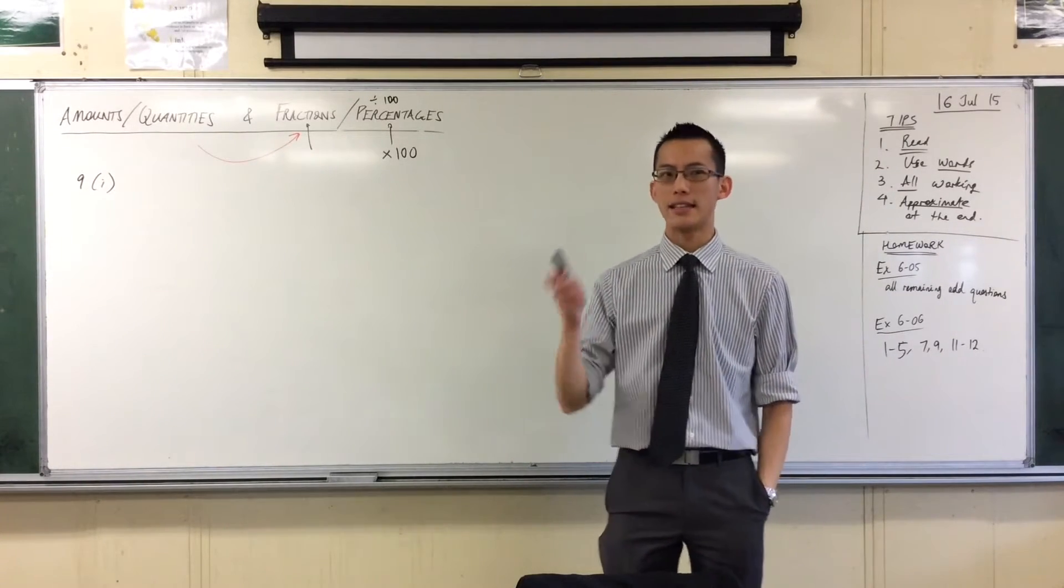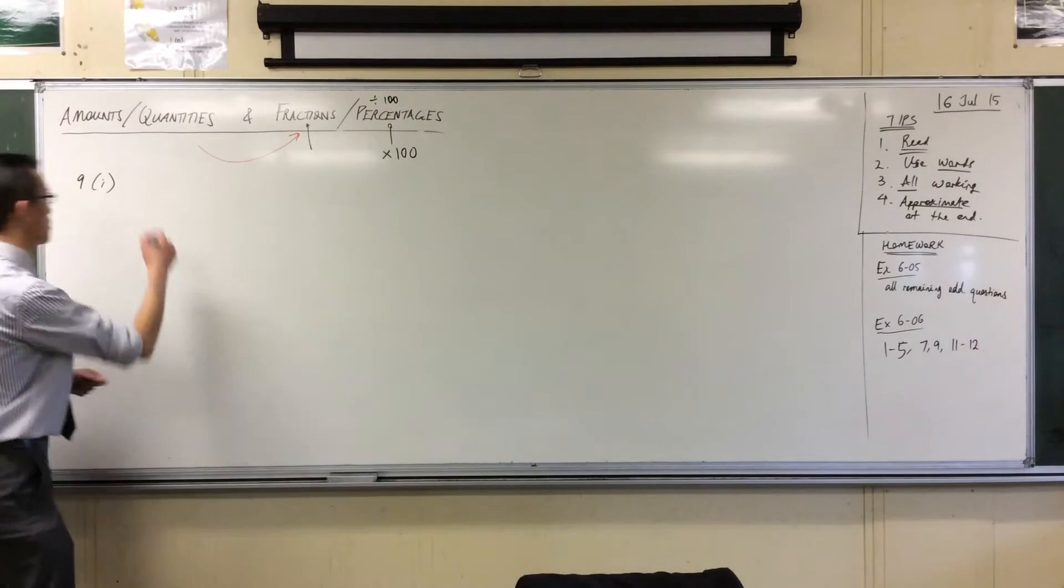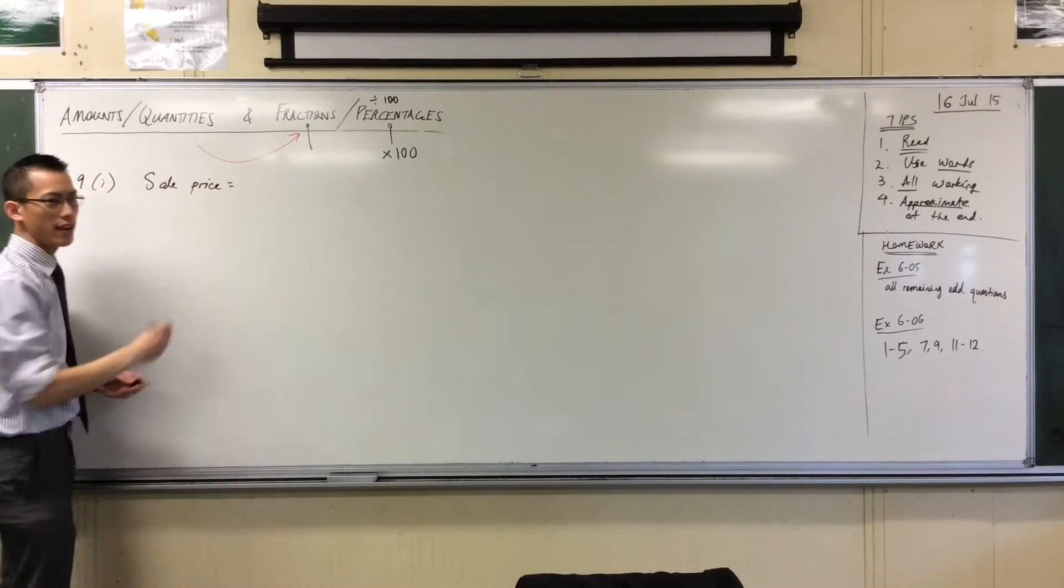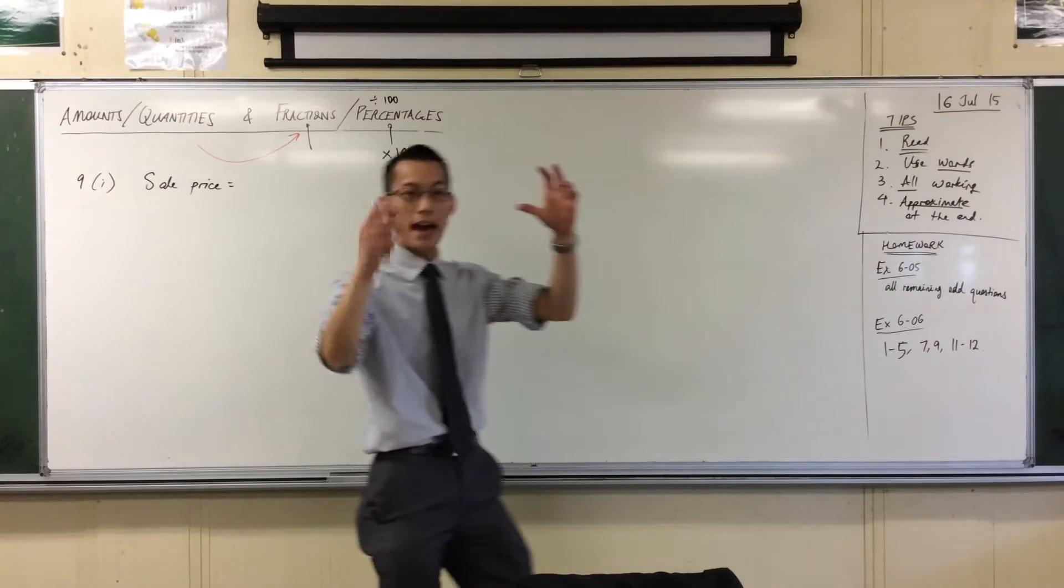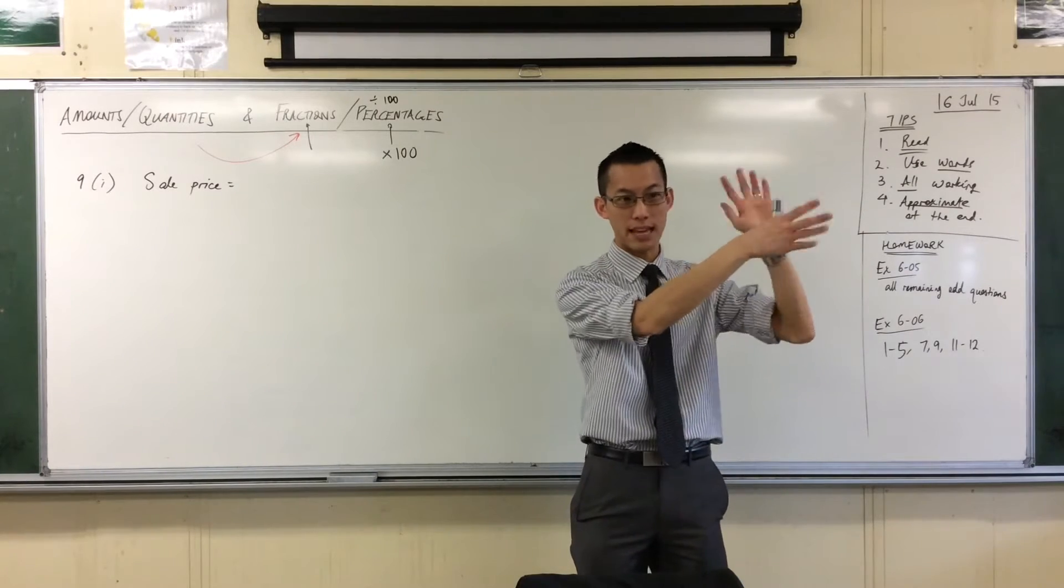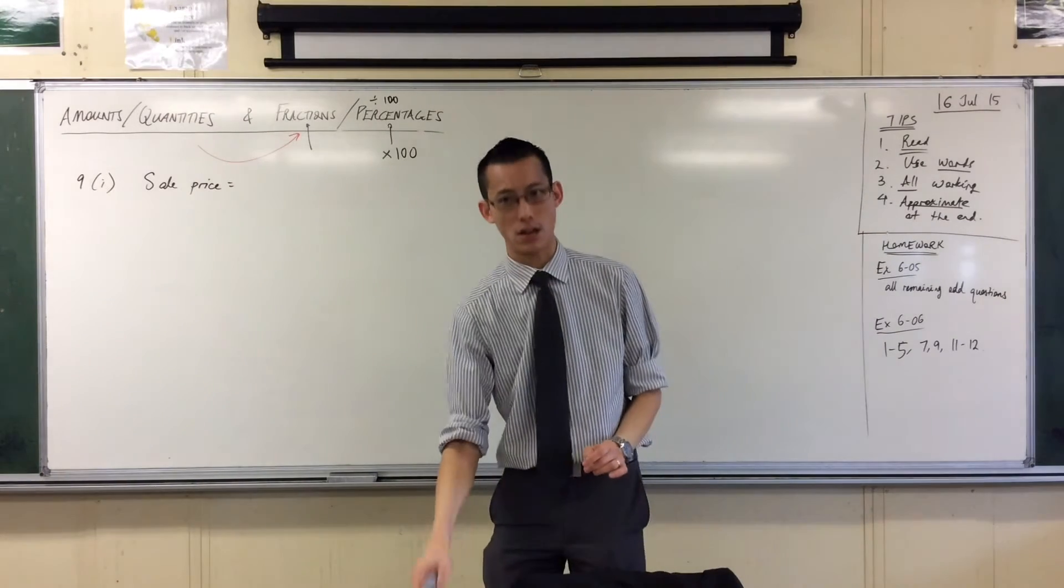You read that carefully. It says the sale price is listed. Usually you see the price and then you work out the discount—oh, it's 30% off, so you take that off. They've already taken it off.